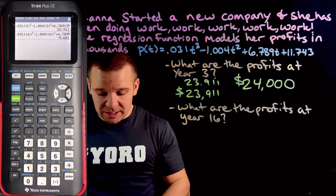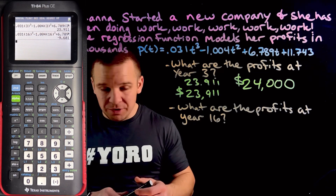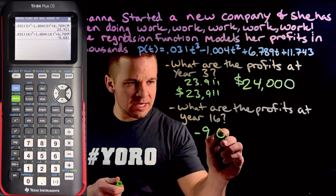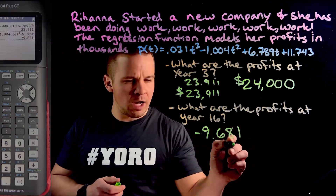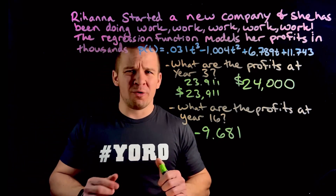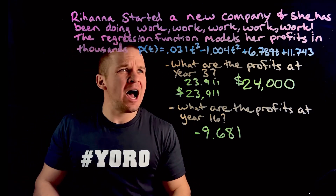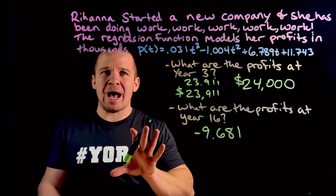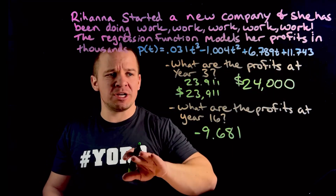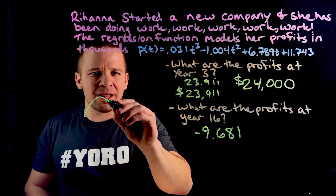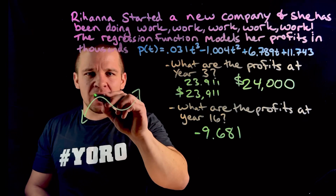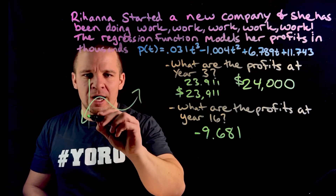And now for this one, I ended up with negative — like negative 9.681. Ooh. Rihanna's having a down year, but I'm thinking she'll bounce back based on this being a cubic regression. So maybe she's in like — maybe it's something like this. And we got a little graph going on.